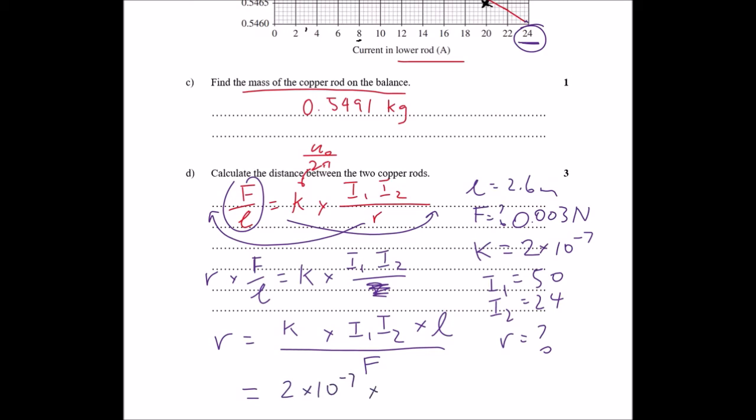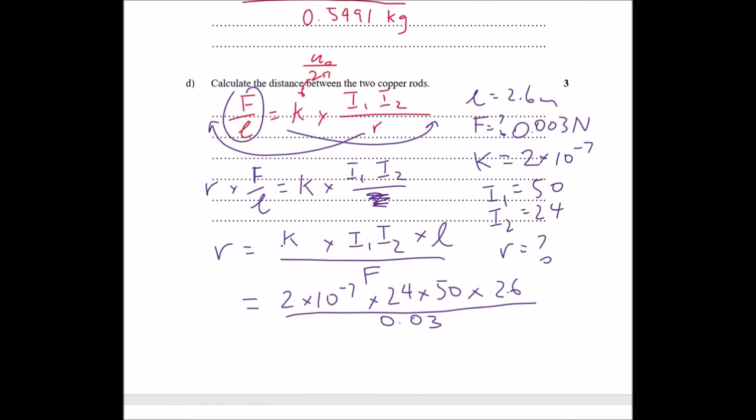So now that I've rearranged the equation with r as a subject, I can now substitute the values into my equation. So just writing it down here. Okay. Now, once you do that, just substitute it into your calculator, and we'll see what we get from there. So the value I get is 0.0208 meters.